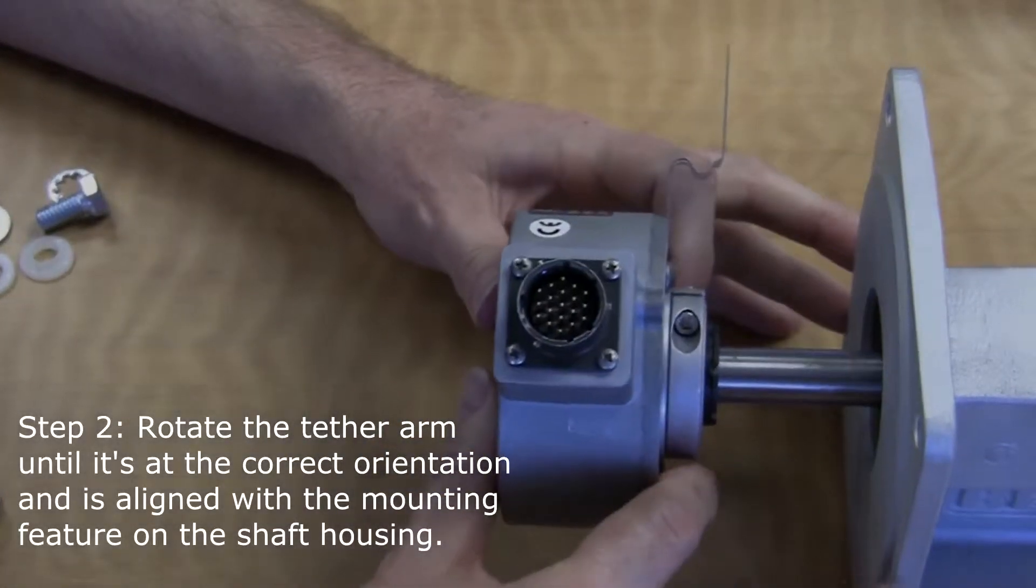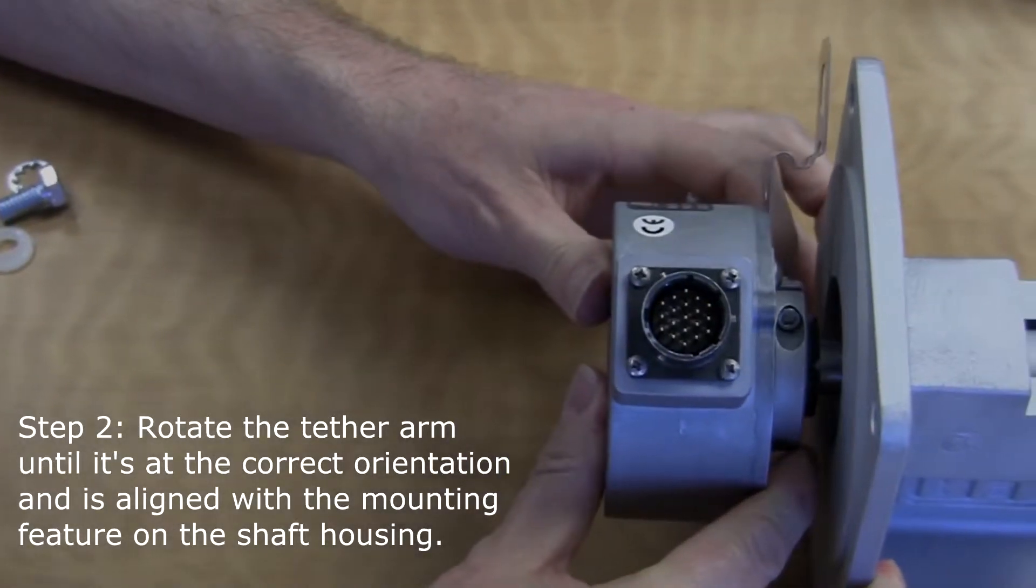Rotate the tether arm until it's at the correct orientation and is aligned with the mounting feature on the shaft housing.